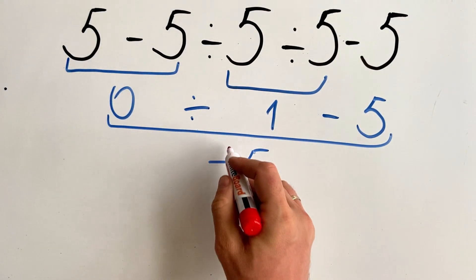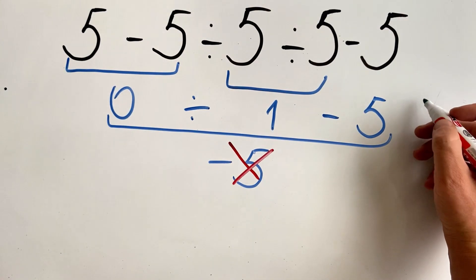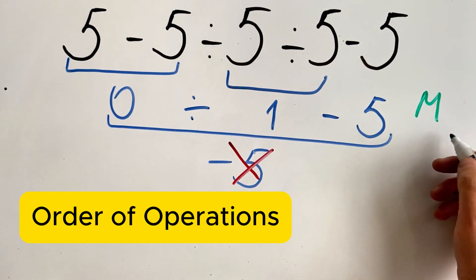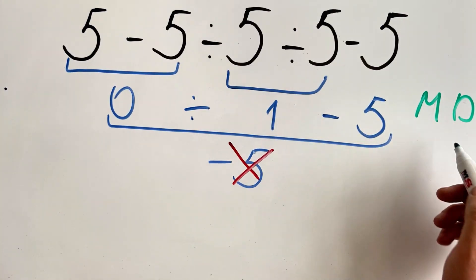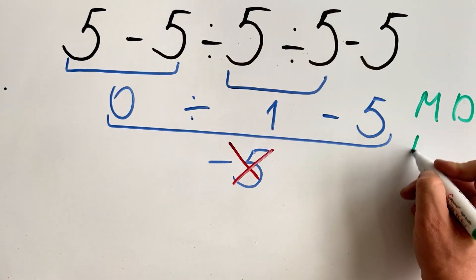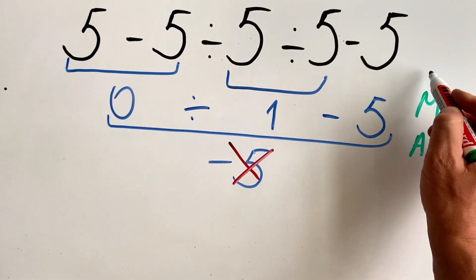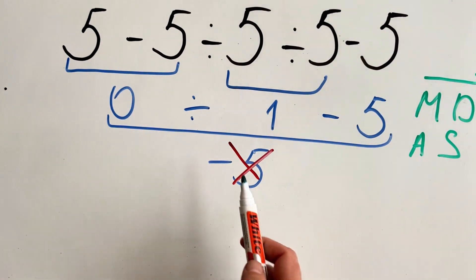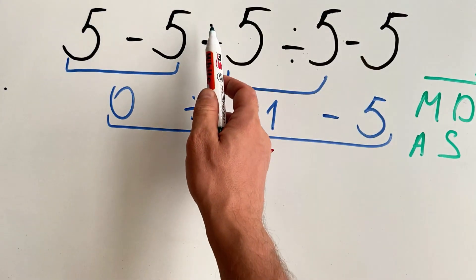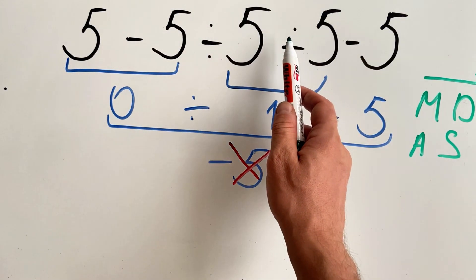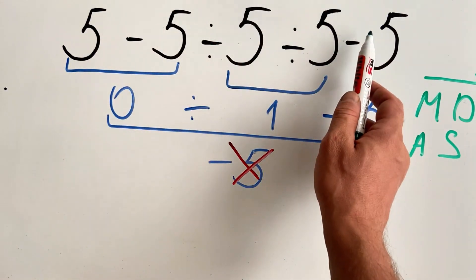But this answer is not correct because according to the order of operations, multiplication or division have priority over addition and subtraction, and they need to be done from left to right. So in this case, we need to do the divisions first. First this one and then this one, and then we do the subtractions.